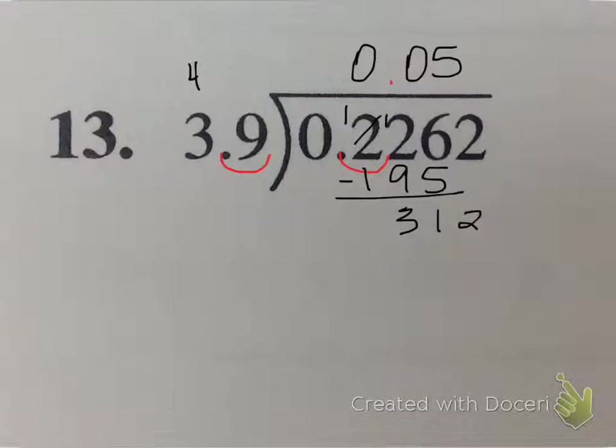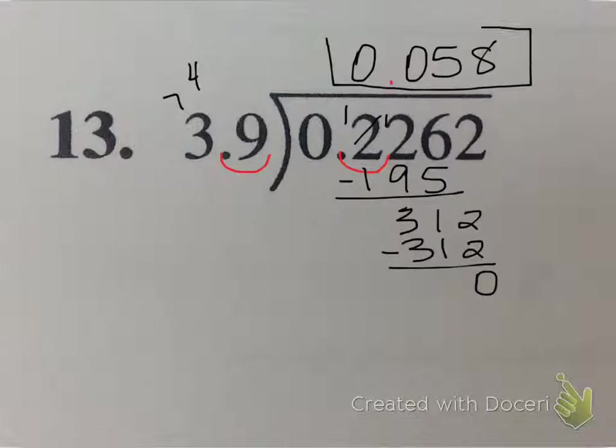Bring down my 2, let's see here, I'm going to do some rounding again. Round 39 to 40, let's round the 312 to 300. How many times would 40 go into 300, or how many times does 4 go into 30? Let's try 9. 9 times 9 is 81. 9 times 3 is 27 plus 8. Okay, so let's back up and change it to 8. 8 times 9 is 72. 8 times 3 is 24, plus 7, goes in evenly. So final answer is 58 thousandths.